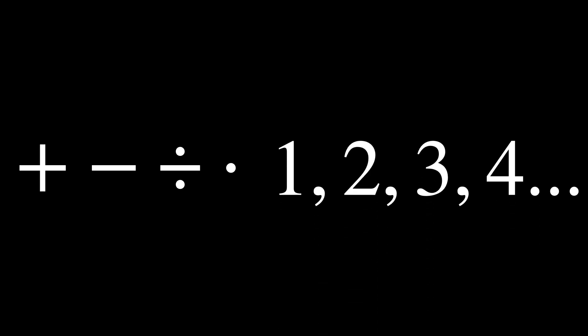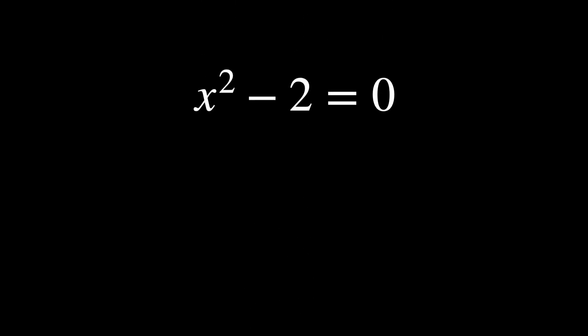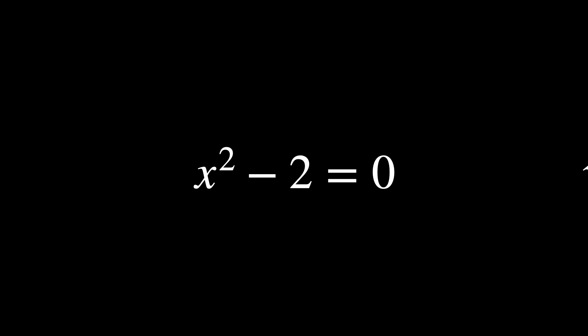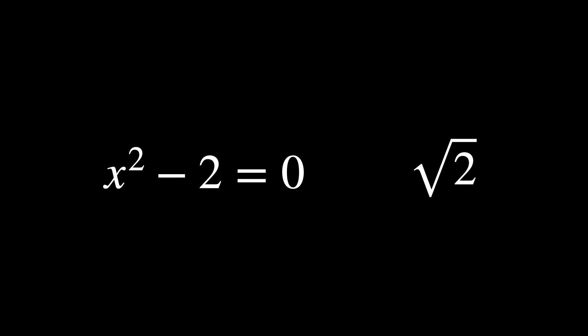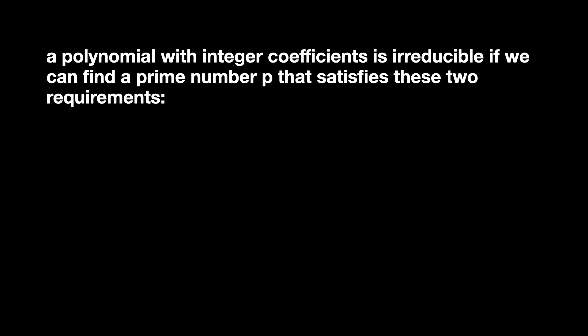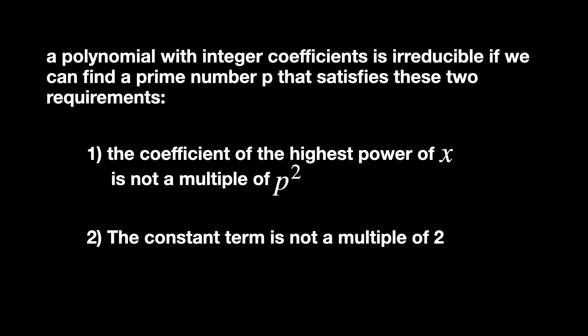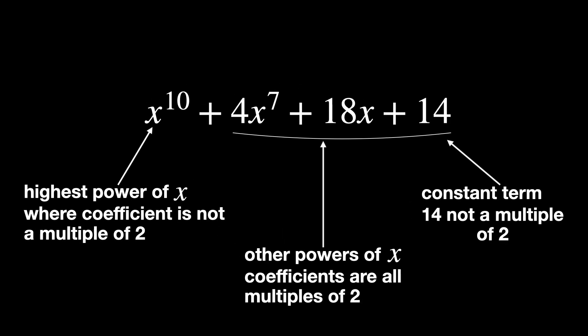These irreducible polynomials are of interest because their roots lie outside the rational numbers, so we need to expand our number system. This pushed for the creation of the radical sign — for example, there is no rational solution to x squared minus 2 equals 0, so mathematicians created the symbol square root of 2 as that solution. It's hard to tell when a polynomial is irreducible, but Eisenstein's criterion helps: a polynomial with integer coefficients is irreducible if we can find a prime p such that the coefficient of the highest power of x is not a multiple of p squared, and the constant term is not a multiple of p squared either.